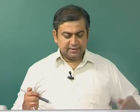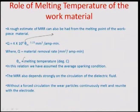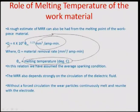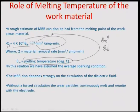A rough estimate of MRR can also be arrived at based on the melting temperature of the material. If θm is the melting temperature, an empirical relationship defines the material removal rate in mm³ per charge as: MRR = 4 × 10⁴ × θm^(−1.23). This indicates that if the melting temperature θm is higher, the material removal rate is lower and vice versa, due to the negative exponent −1.23.